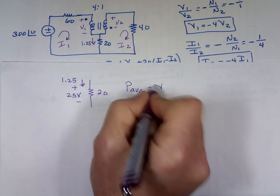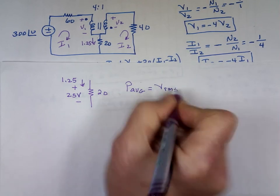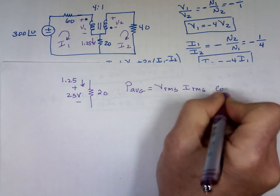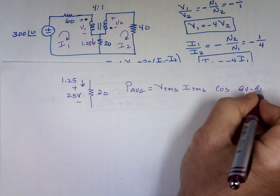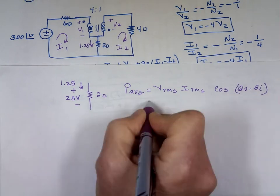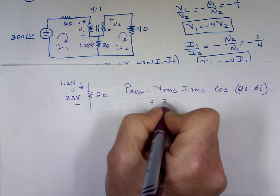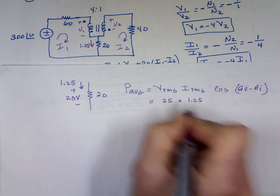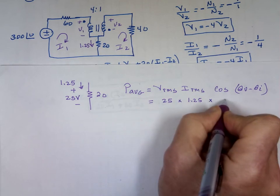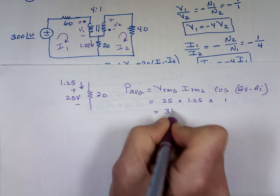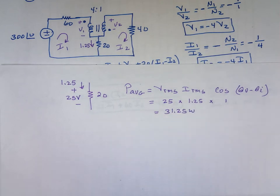V RMS, I RMS, cosine theta V minus theta I. The difference here is 0. Cosine of 0 is 1. So V RMS, that's 25. I RMS is 1.25. Cosine of 0, which is 1. And you end up with 31.25 watts. That's average power delivered to that 20 ohm resistor.